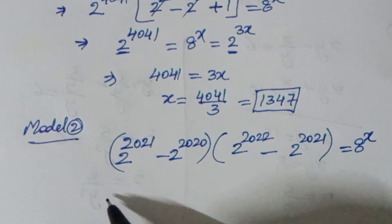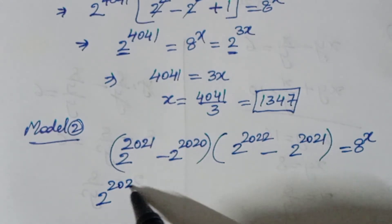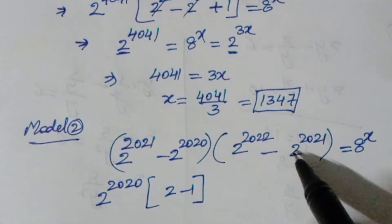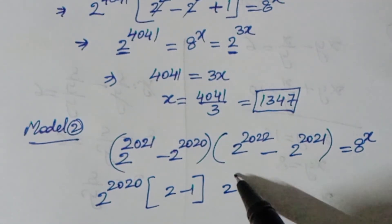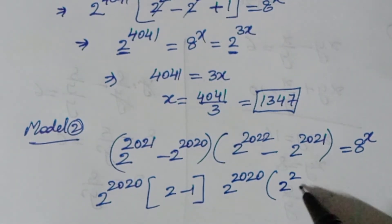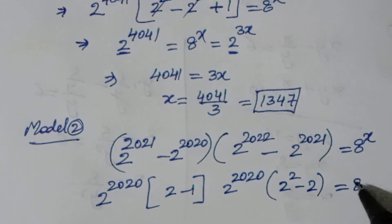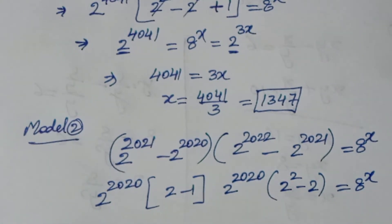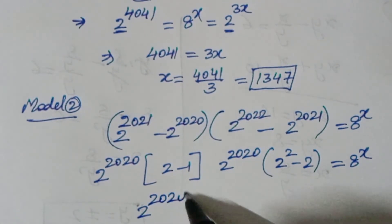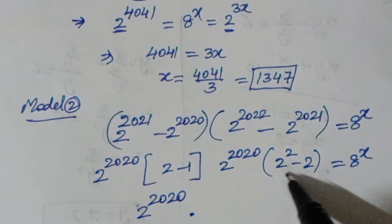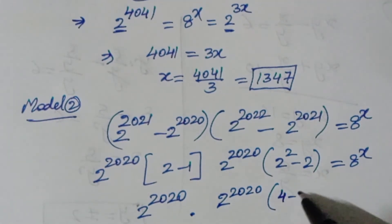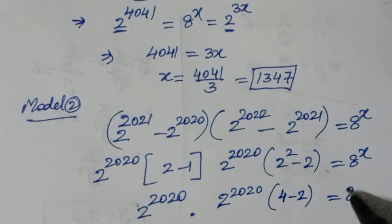In the second method, I take 2 to the power of 2020 as a common factor from the first bracket, giving 2 minus 1. From the second bracket I also take 2 to the power of 2020 as common, giving 2 squared minus 2. So we have 2 to the power of 2020 times 1, multiplied by 2 to the power of 2020 times 4 minus 2, equals 8 to the power of x.